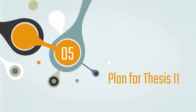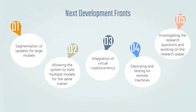For our plan next semester, we have five main objectives. The first is adopting big size models, which will require segmentation of model updates that is yet to be implemented. The second is to scale our system to sustain more than one model, along with the integration of virtual cryptocurrency into the system. Then we will deploy and test our systems on remote machines. With all this, there are research questions that need to be investigated for our research paper.